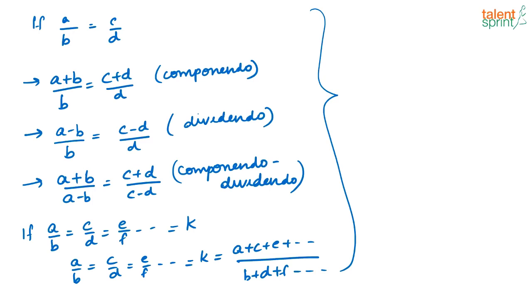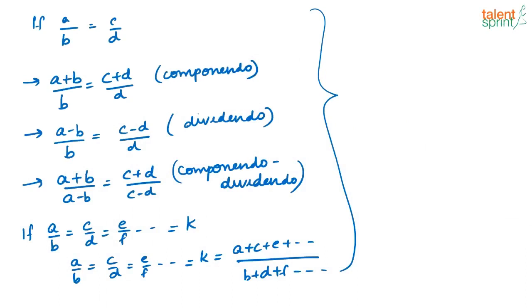One more important property: if a by b equals c by d equals e by f and so on, all equal to some value k, then this is also equal to a plus c plus e plus... divided by b plus d plus f plus... Adding the numerators and adding the denominators gives you the same ratio. Ratio is a very basic topic in quantitative ability and its application is spread throughout all other topics like profit and loss, percentages, ages, and partnership.